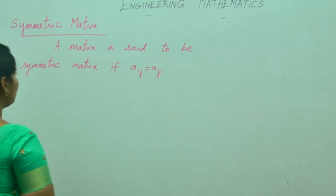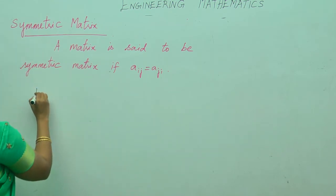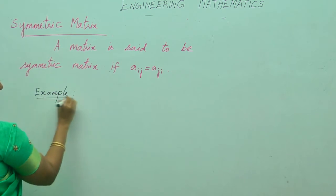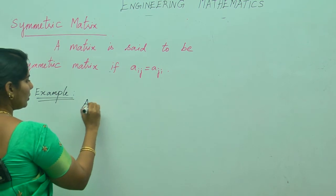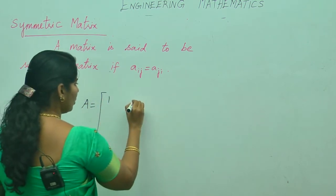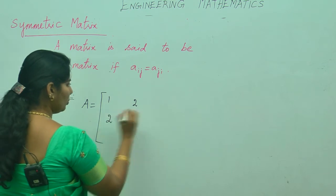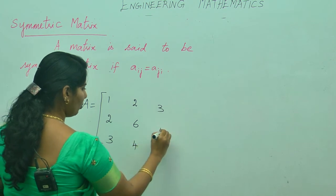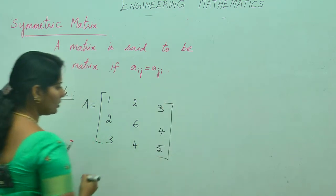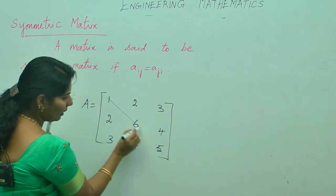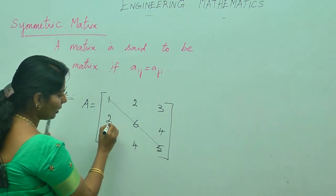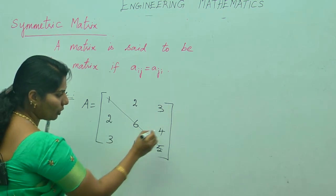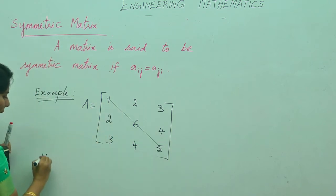For example, take the matrix A equals [1, 2, 3; 2, 3, 4; 3, 4, 5]. You can leave the diagonal elements and check the other elements: the 2 and 2 are equal, the 3 and 3 are equal, the 4 and 4 are equal.